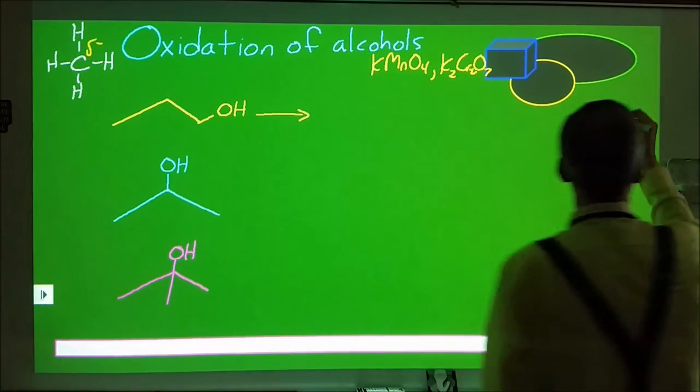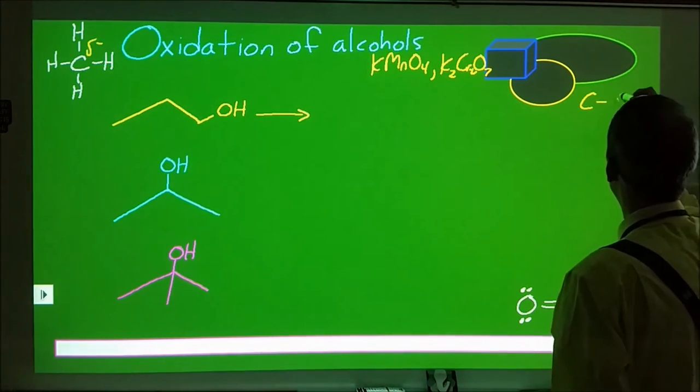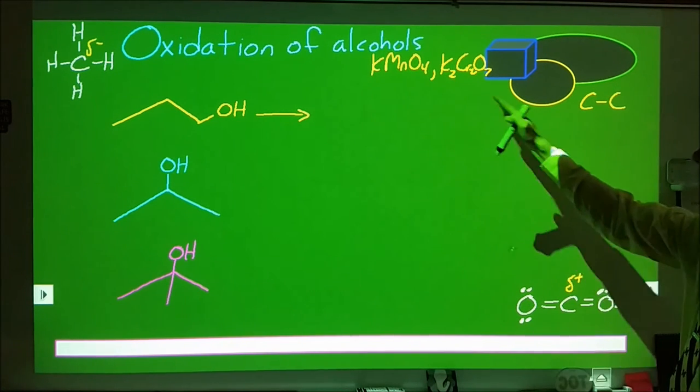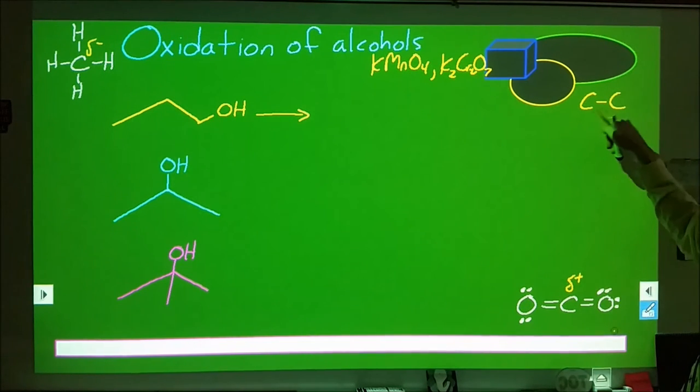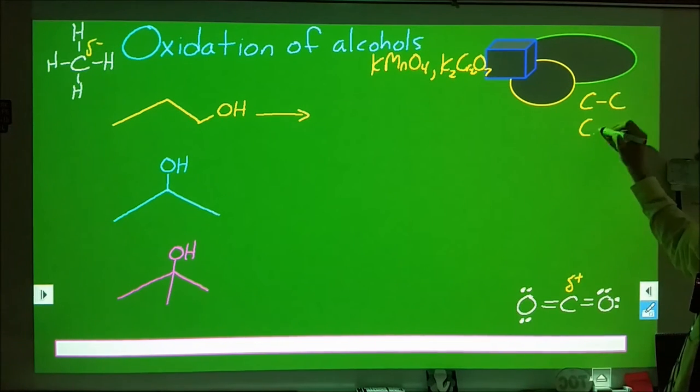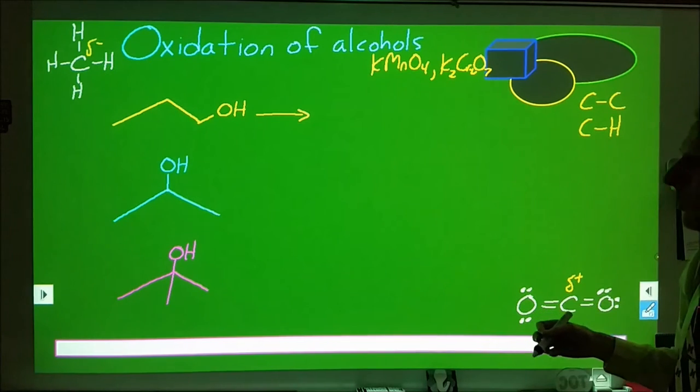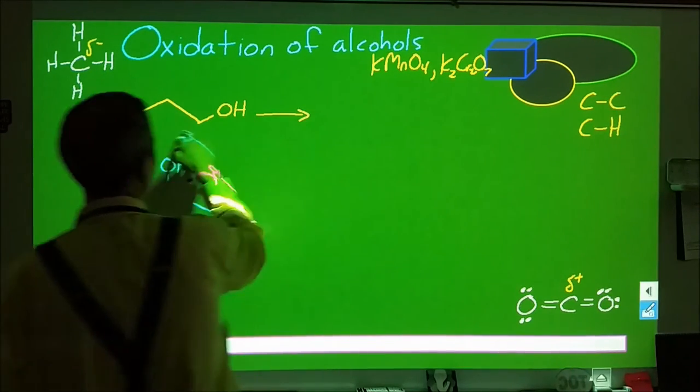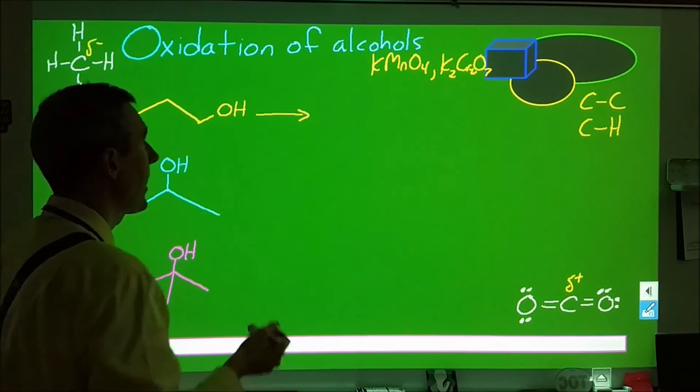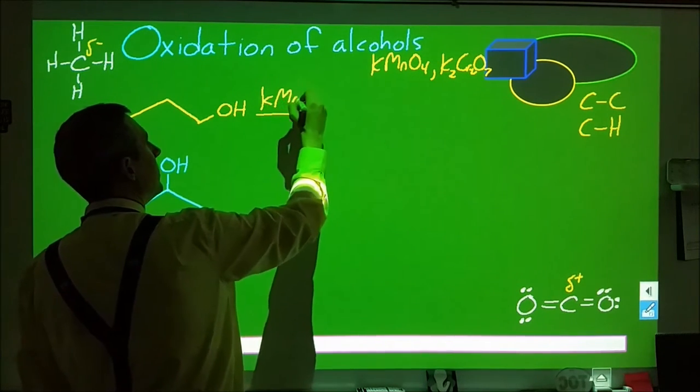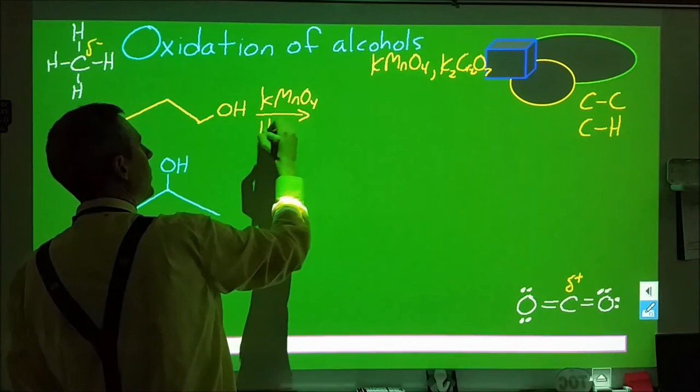When we do this, the number of carbon to carbon bonds is going to remain unchanged. The agents we're using to do the oxidation are not capable of breaking or changing these. But the carbon to hydrogen bonds can be manipulated. However many things we start with attached to the particular carbon we're looking at will influence what happens.